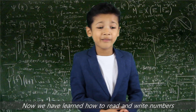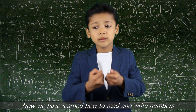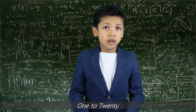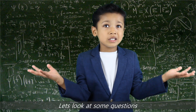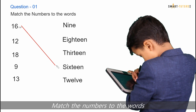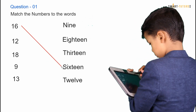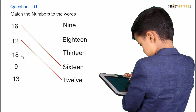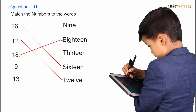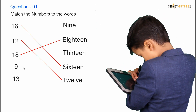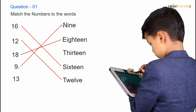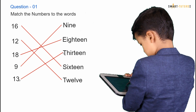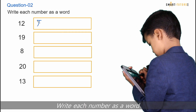Now we have learned how to read and write numbers 1 to 20. Let's look at some questions. Match the numbers to the words. Write each number as a word.